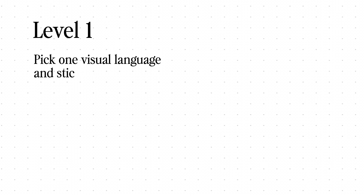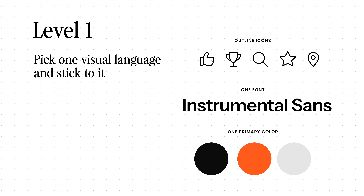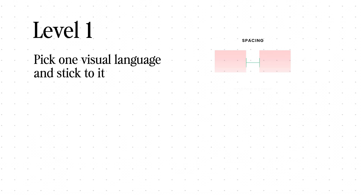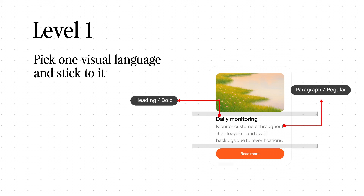To make this look more expensive without changing much, you would pick one visual language and stick to it. Same icon style, same type scale, same spacing, same corner radius, same orange system. Even a simple template can start looking designed once everything speaks the same language.